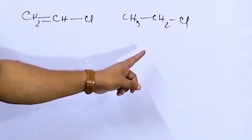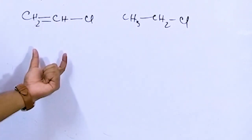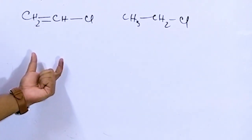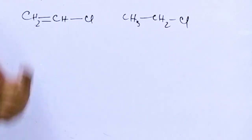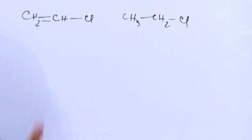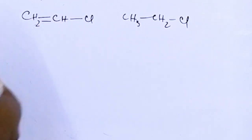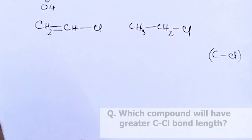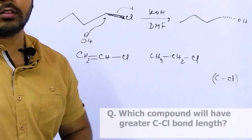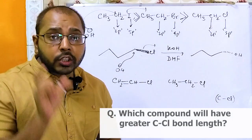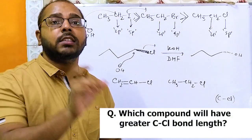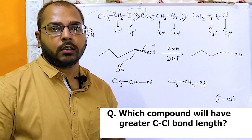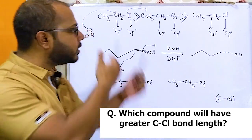Next question: ethyl chloride and vinyl chloride are given — vinyl chloride being the monomer of PVC, polyvinyl chloride. The question is: which one will have the greater C-Cl bond length?